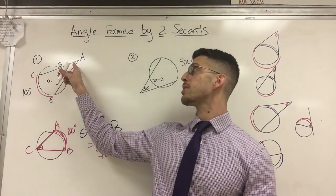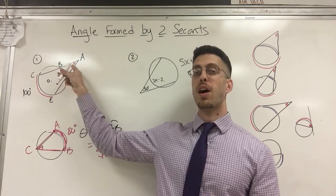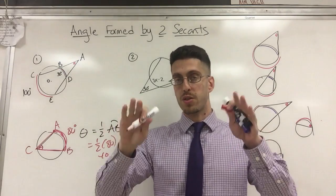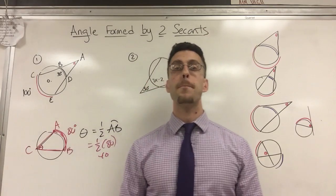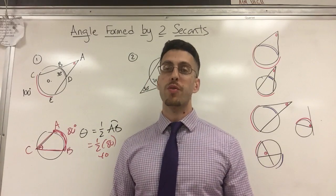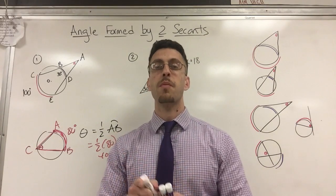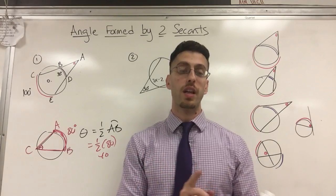If the angle is outside, it is one half the difference of the intercepted arcs. If it's inside, it's actually one half the sum of the intercepted arcs, but it's generally one half. Keep that in mind. And instead of saying one half, you can just divide by two at the end.